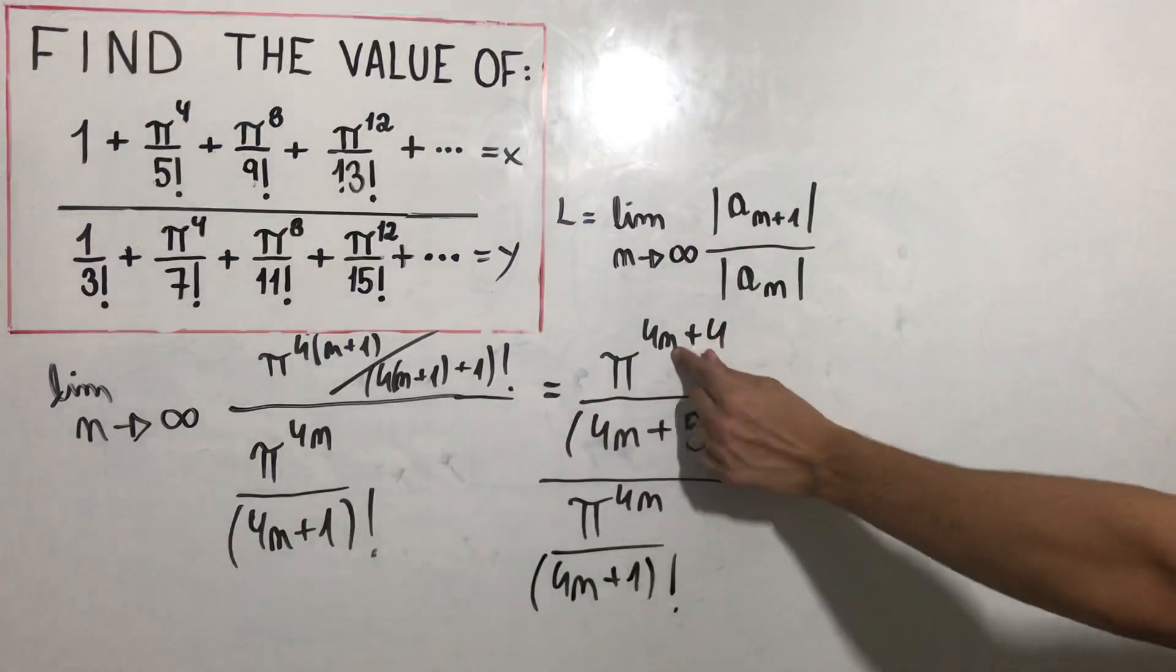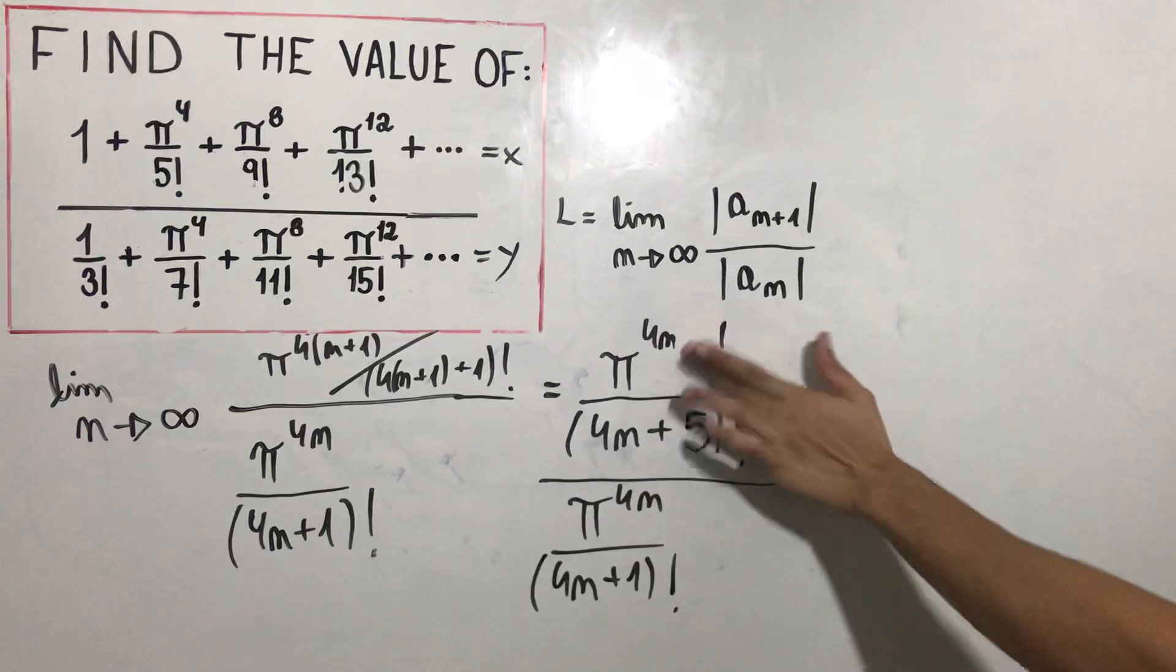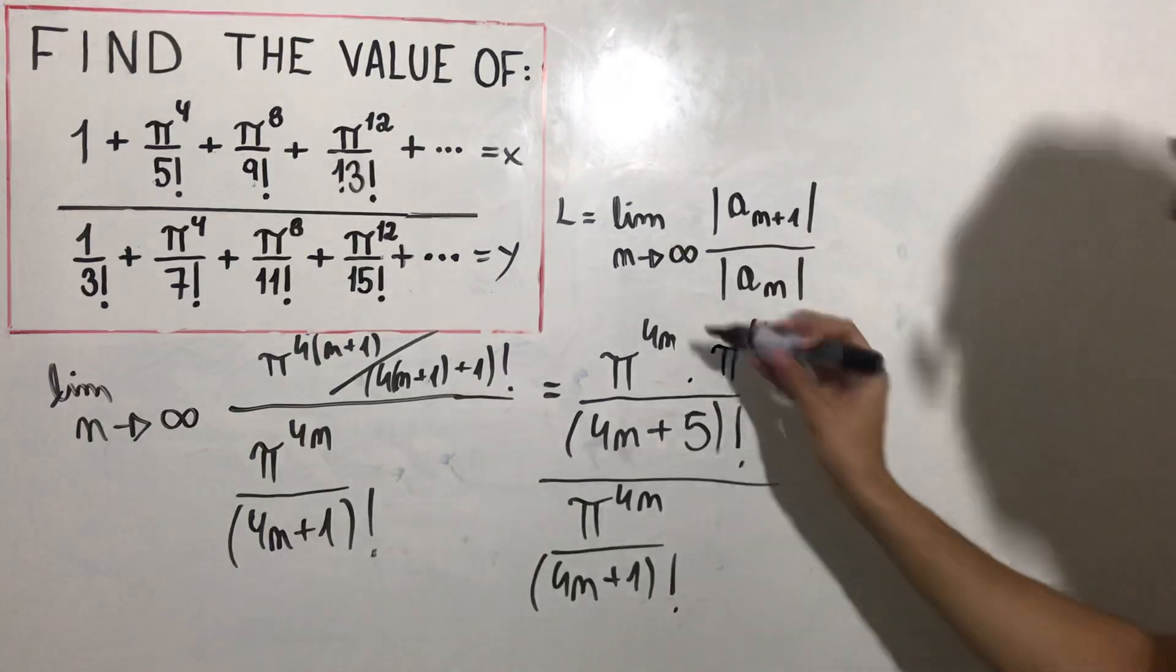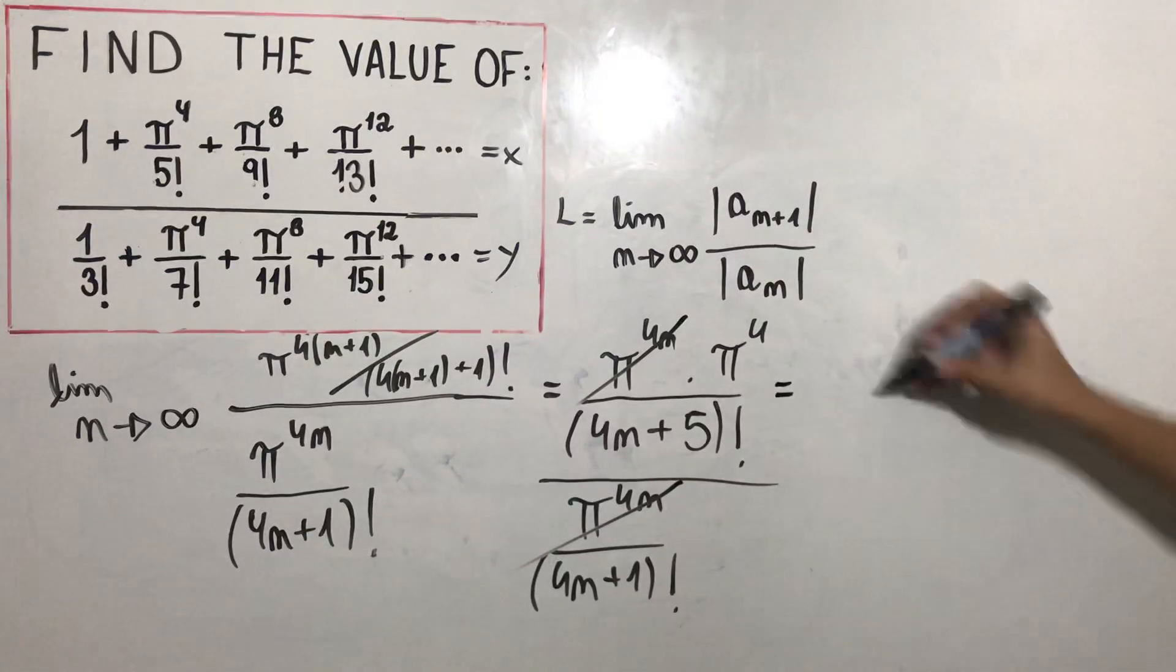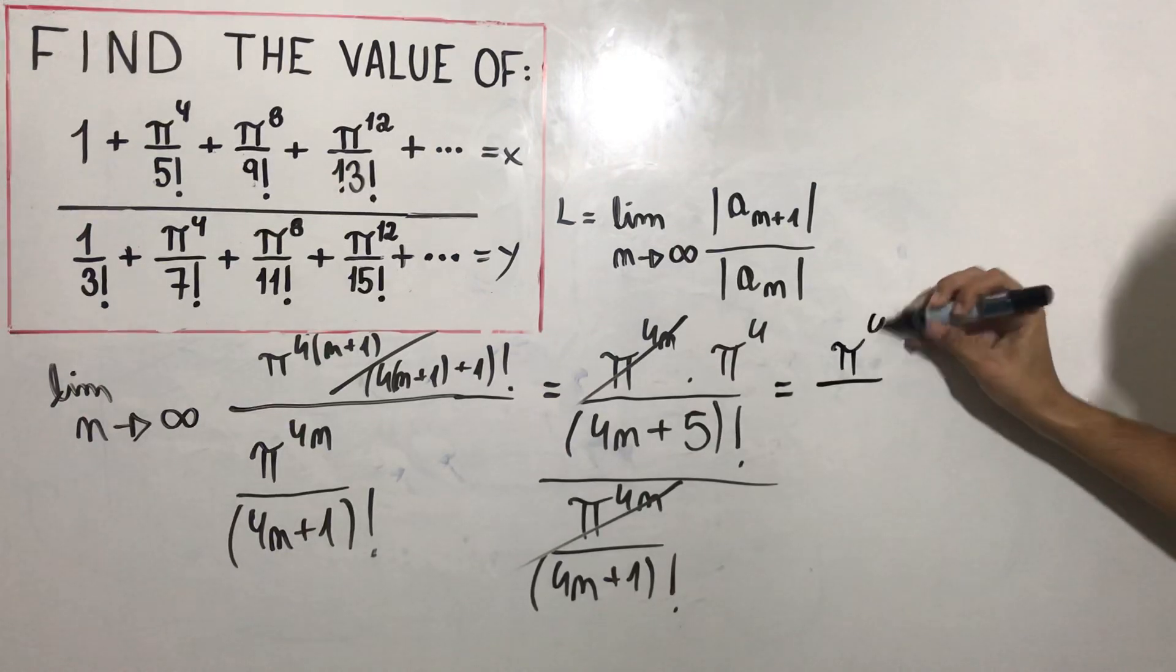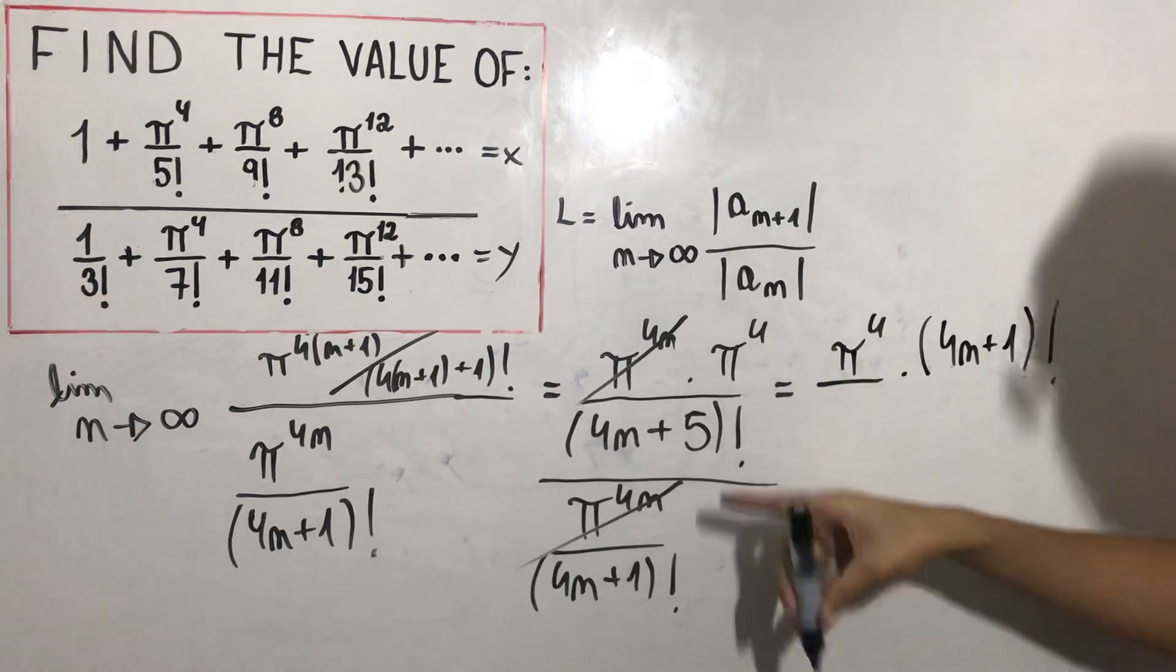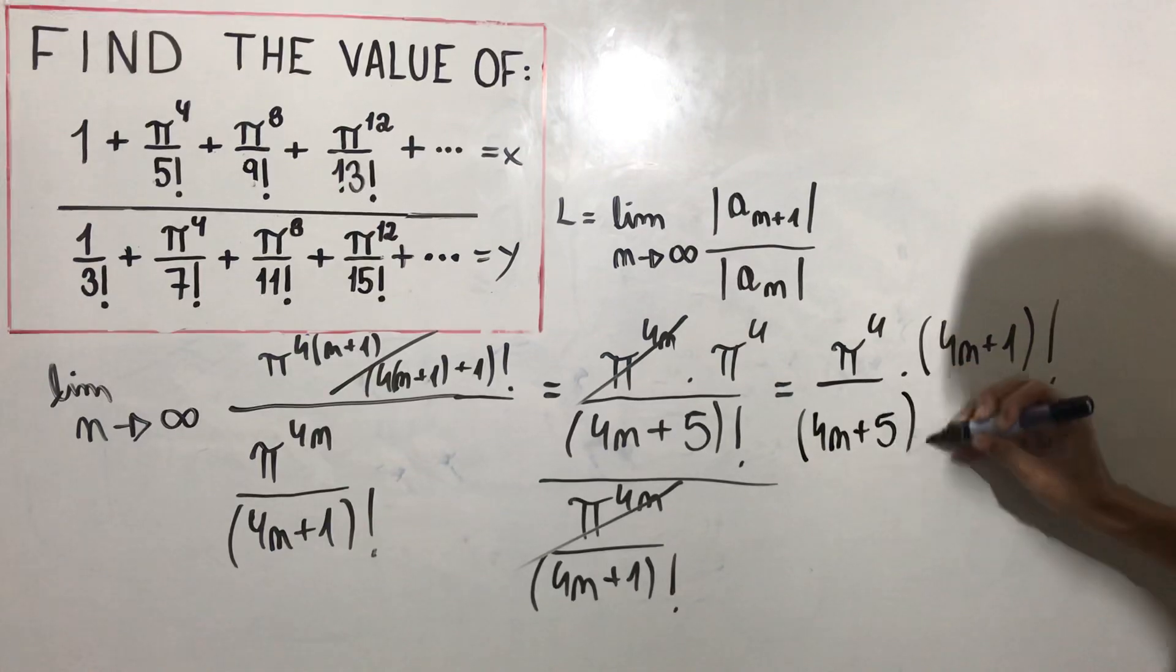And we know that π^(4n+4) is equal to π^4n times π^4. So we can trim these things. So this is equal to π^4 times (4n+1)! divided by (4n+5)!.